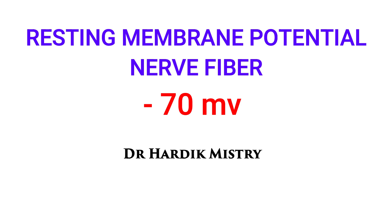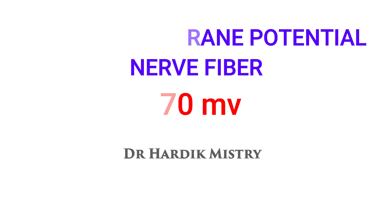We can also say from this point that nerve fibers are more excitable than muscle fibers. That is why the resting membrane potential of the nerve fiber is minus 70 millivolts, compared to the resting membrane potential of the muscle fiber which is minus 90 millivolts. I hope you are no longer confused about the values of the resting membrane potential of the nerve fiber.